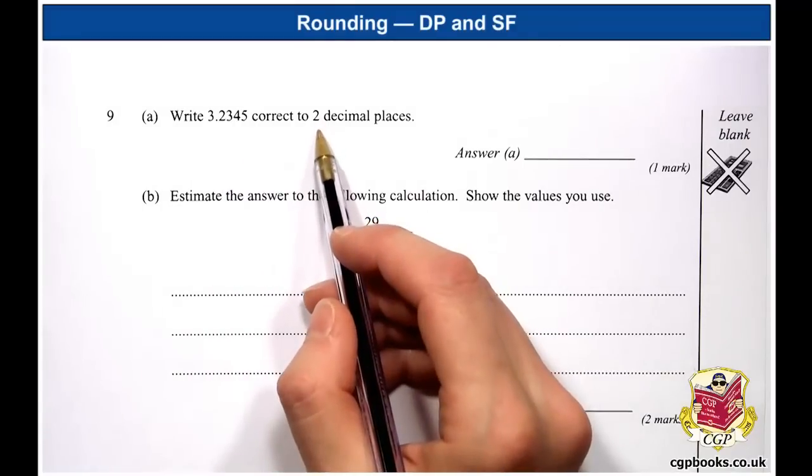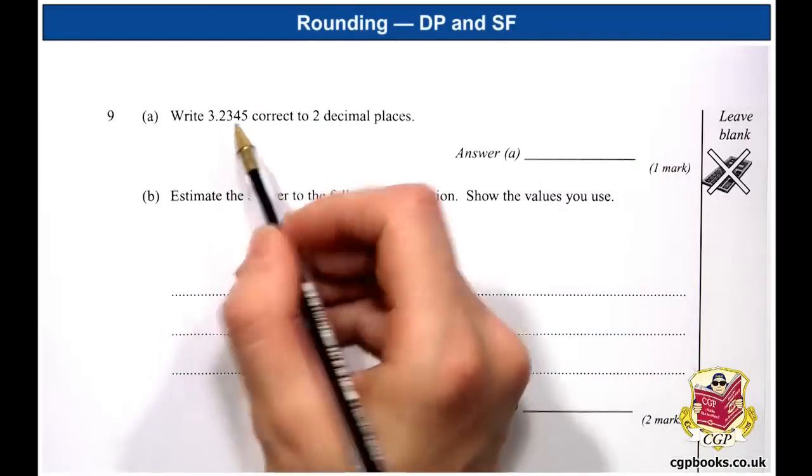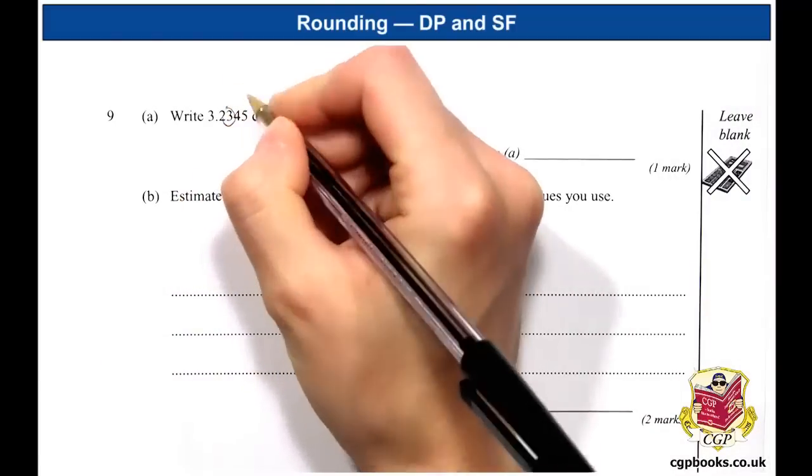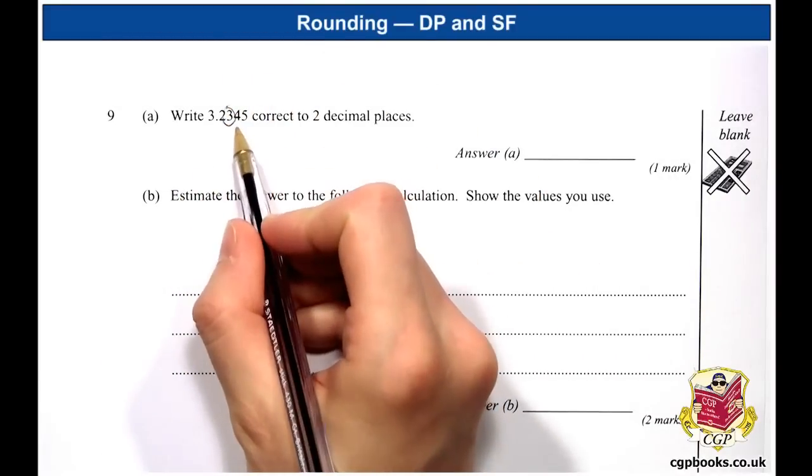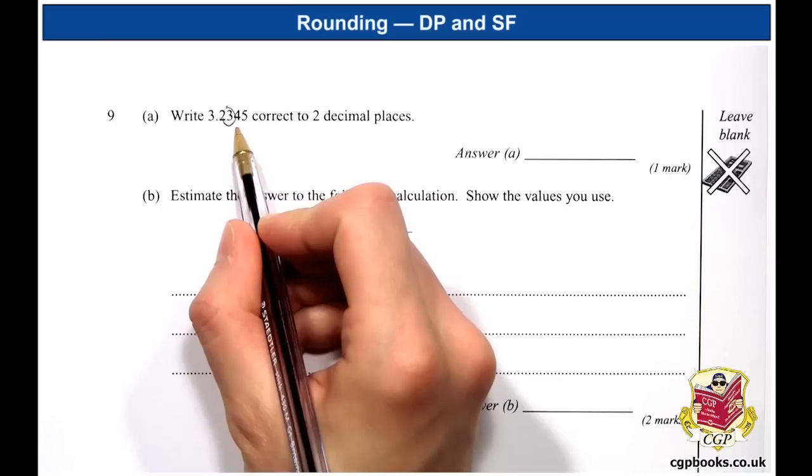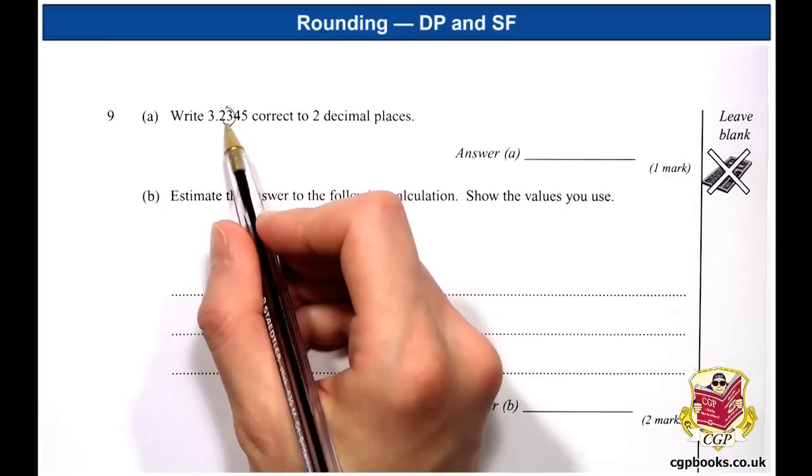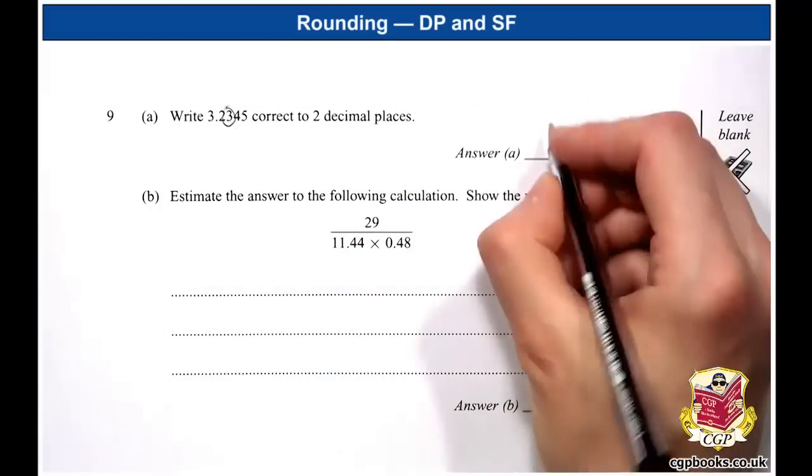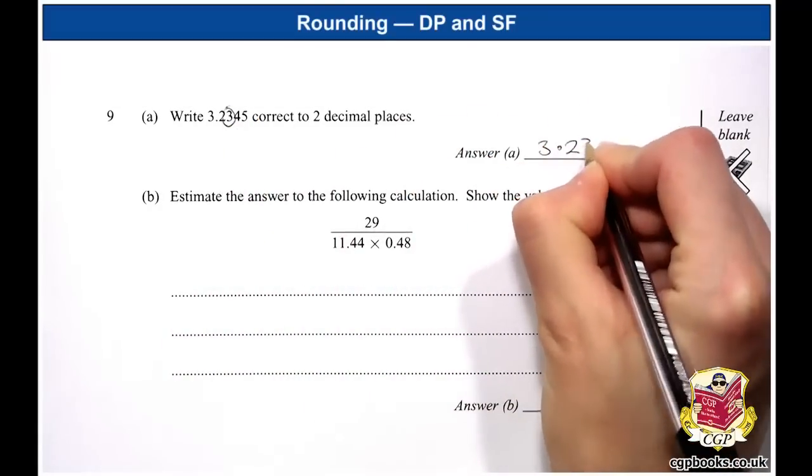So we want two decimal places, so that's going to be 1, 2, this 3 here, so I'll circle that. The next digit is the decider, and remember that tells us whether to round up or not. It's less than or equal to 4, so we keep the 3, and that means our answer is 3.23.